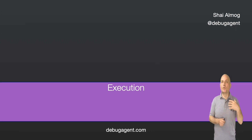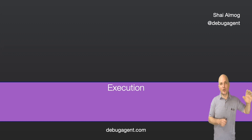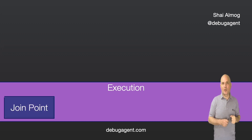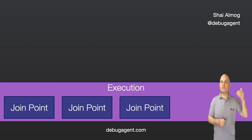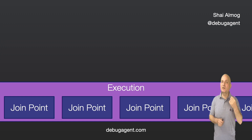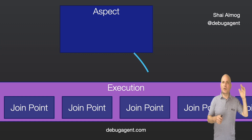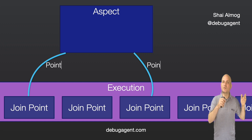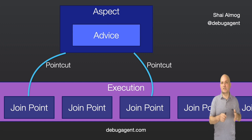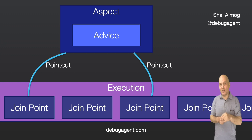Let's explain this more visually. We have an execution — this is where our code is running: methods, classes, and everything. Within this execution we have join points, which are the areas where AOP can inject itself, typically on method boundaries. An aspect is a specific binding which we bind using a pointcut, which links us to specific join points, and that triggers the advice, which is the actual code executed at that point.